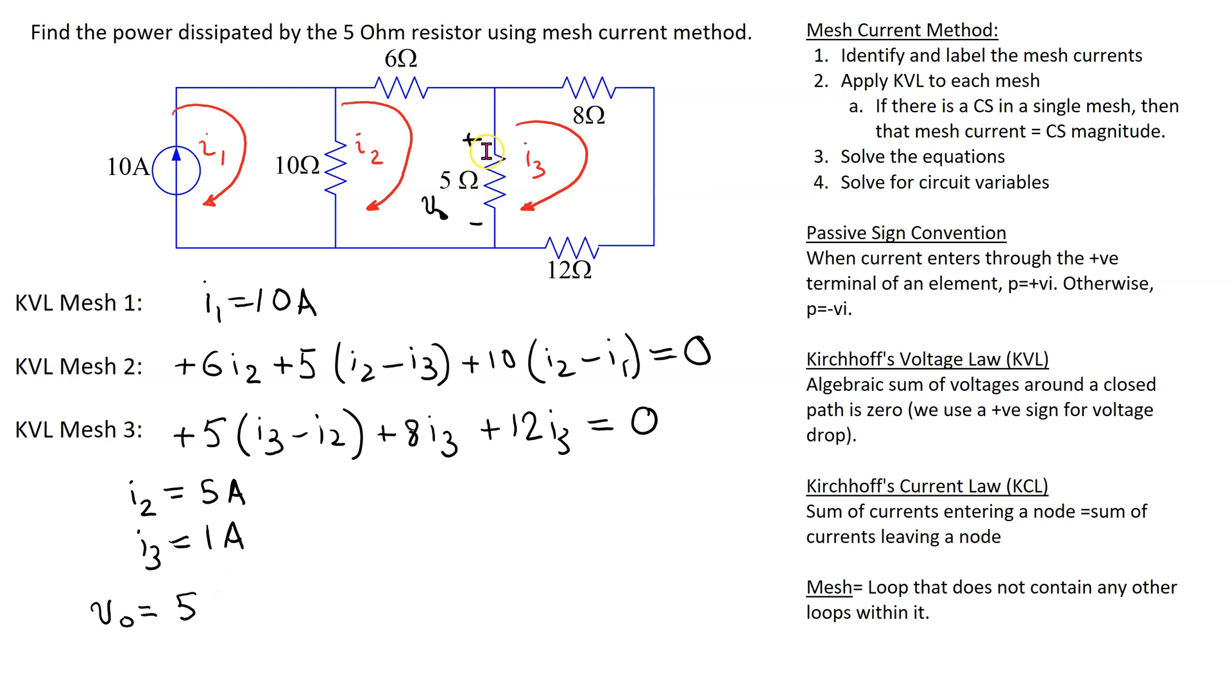With this assumed polarity, this means the current flowing through this resistor is I2 minus I3. So, V0 is 5 times I2 minus I3, which is 5 times 5 minus 1. This gives 20 volts.